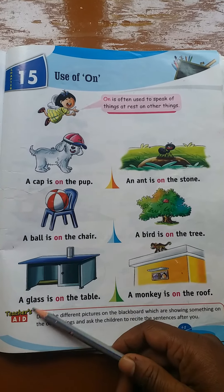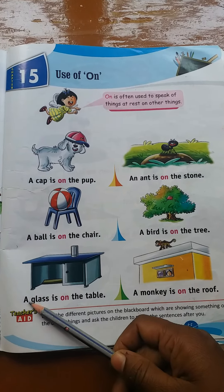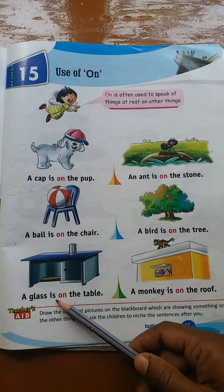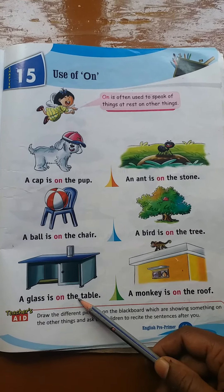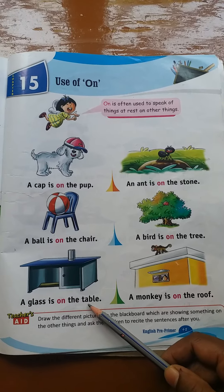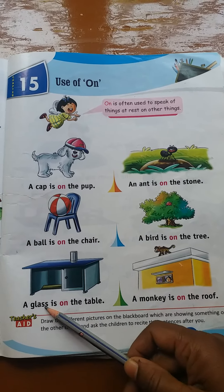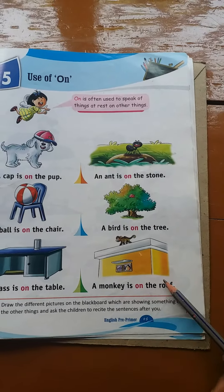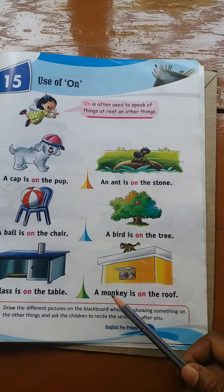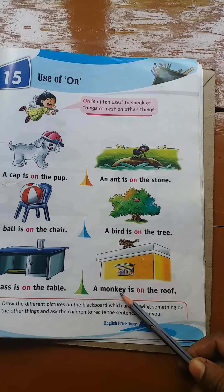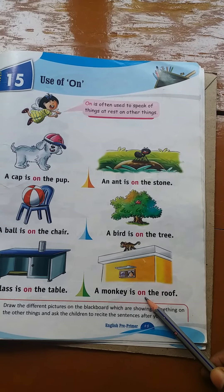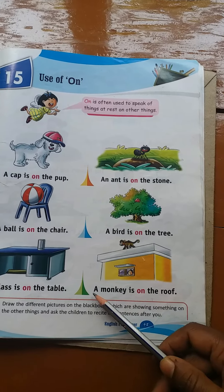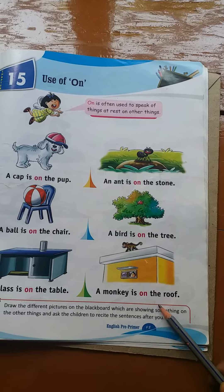Like this you all have to read your book. Again, see the line: A-G-L-A-S-S is glass. I-S is O-N on T-H-E the T-A-B-L-E table. A glass is on the table. Now see the last picture: A-M-O-N-K-E-Y monkey. I-S is O-N on T-H-E the R-O-O-F roof. A monkey is on the roof.